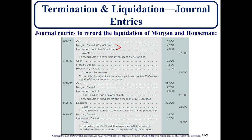Instead of debiting a loss on sale of inventory, we directly reduce the capital balances of the two partners. If it were the other way around — sold at a gain — we would credit their capital balances. The same applies to the receivable: sold at a loss, so we reduce capital balances. Same for land, building, and equipment. After that we still have cash to pay off the $32,000 liability, satisfying that obligation, as well as paying any liquidating expenses — any expenses or revenues are debited or credited to the partners' capital accounts.